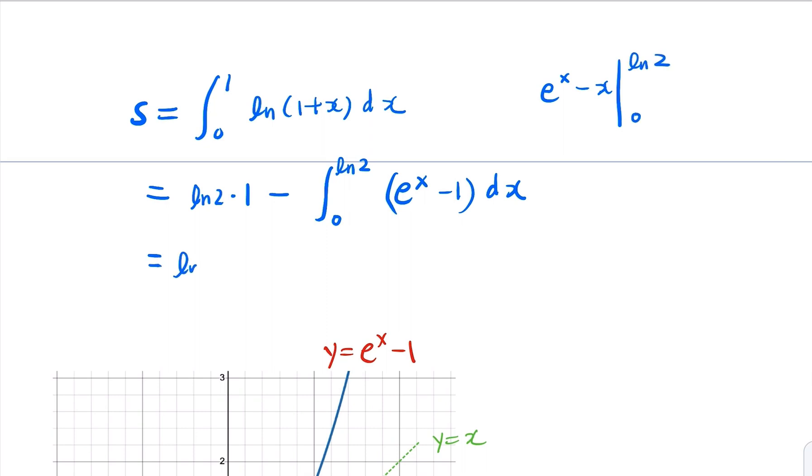So what we have is log 2, minus this one. E to the log 2's part, that's going to be 2.